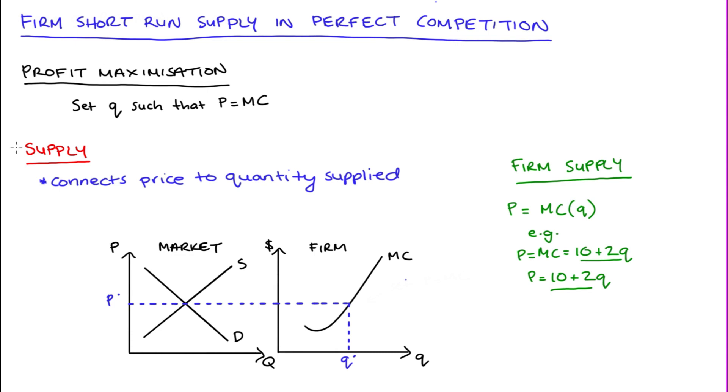In my diagram here, the price p star, we find that at the intersection of market demand and market supply, that's our price in the market. The firm will take that price as given and it will set the quantity that it produces q star such that price is equal to marginal cost.